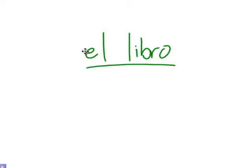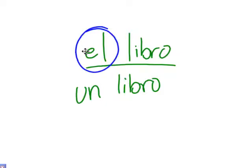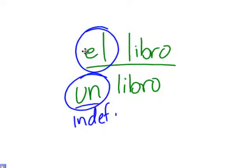El libro — you'll probably remember that — the book. Now, after we talked about el libro, then we started talking about un libro. El libro was a definite article because we definitely know which book we're talking about. And un libro we called an indefinite article because it was undefined as to which book we're talking about — just a book.